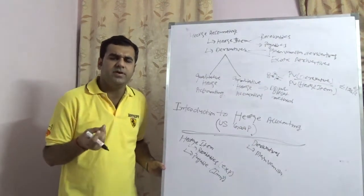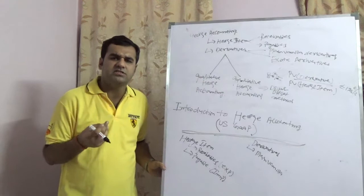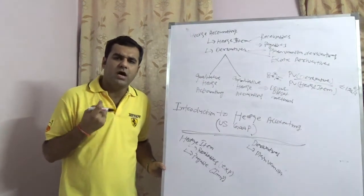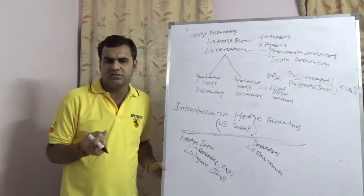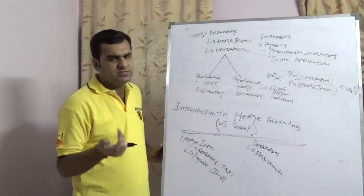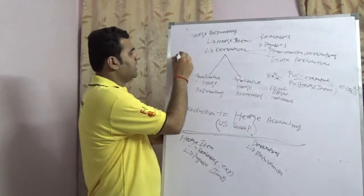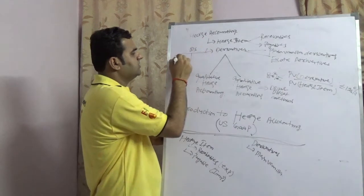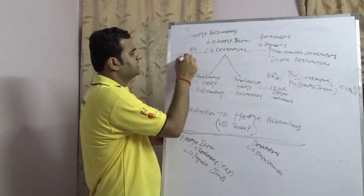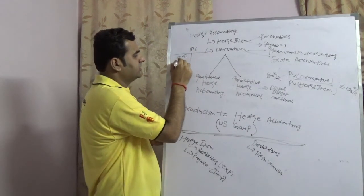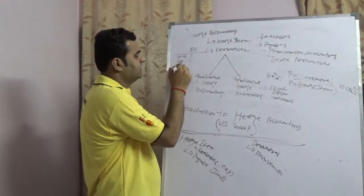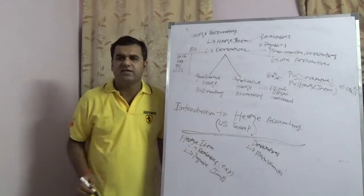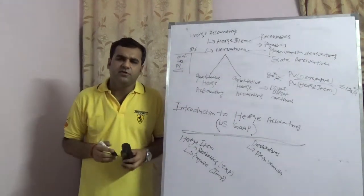Hedge accounting is an art that needs to be done carefully. The basic premise is that the gain or loss which you generate from your outstanding derivatives — where do you park the same? As per US GAAP, the gain or loss is parked in the balance sheet under a category known as Other Comprehensive Income (OCI). This affects the gain or loss accordingly.